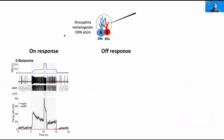On responses are seen with many excitatory odorants. If you apply the odorant in a stepwise manner, with a long background pulse and a short foreground pulse on top, the neuron will increase its activity when the odor concentration increases at both the onset of background and foreground, as seen in the firing rate. When the odor concentration decreases, the neuron activity will decrease.